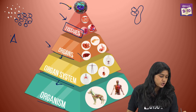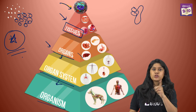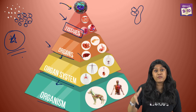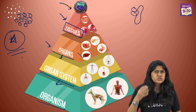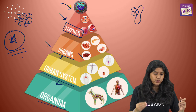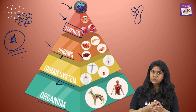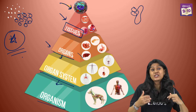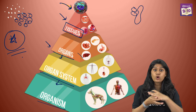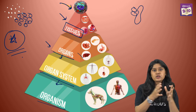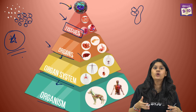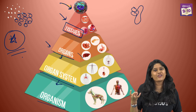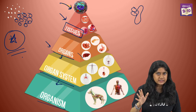This is a very important question for two marks, which is usually asked in the examination. The question often asked is: why is this level of organization important? It's because a cell alone will not be able to do a lot of these functions. We are a multicellular organism and we need different types of cells and tissues to do a certain set of functions. That's how the level of organization plays a very important role in the life of multicellular organisms.